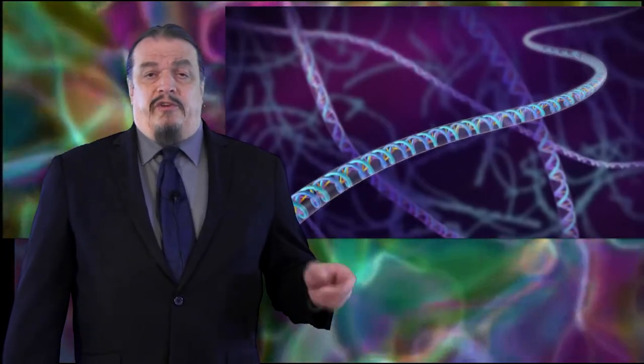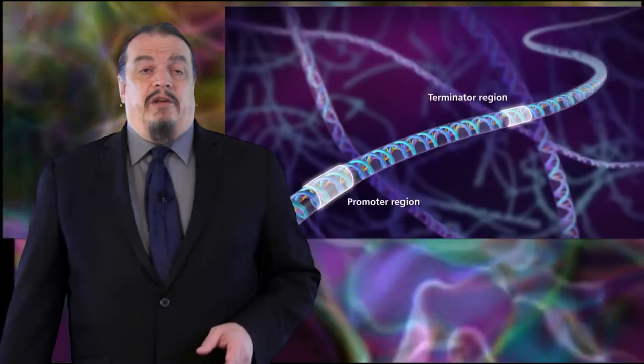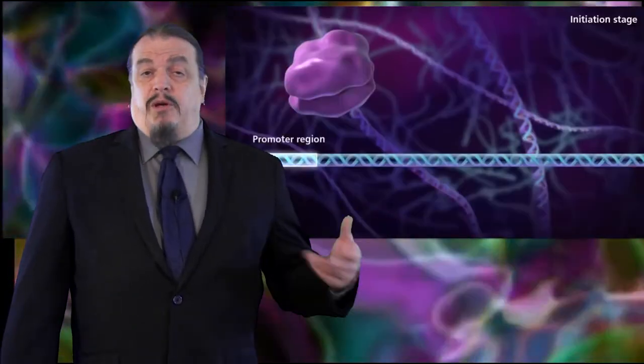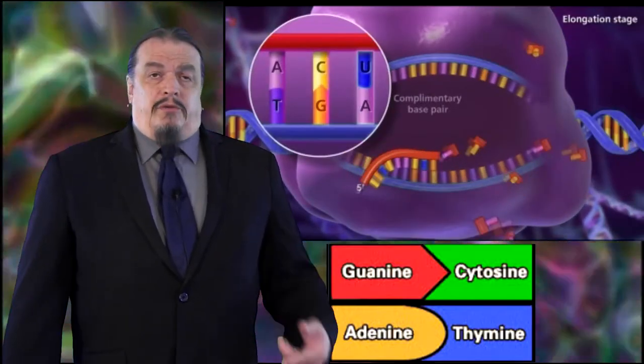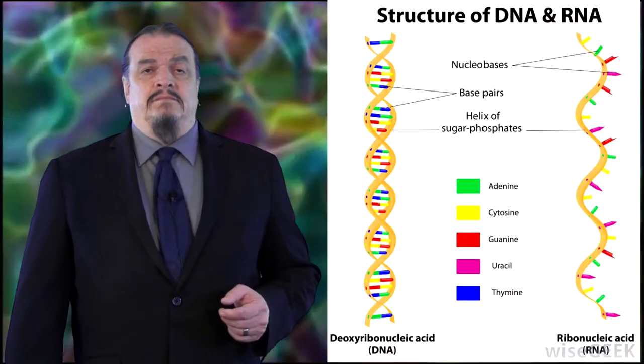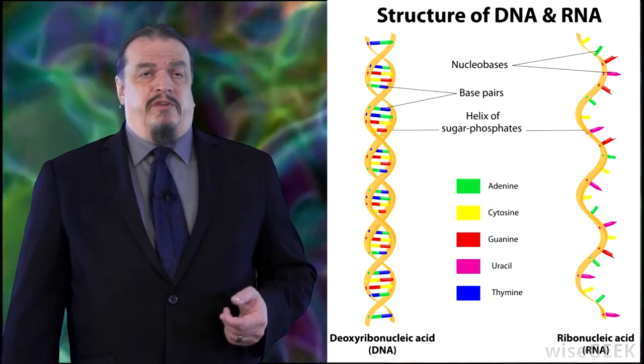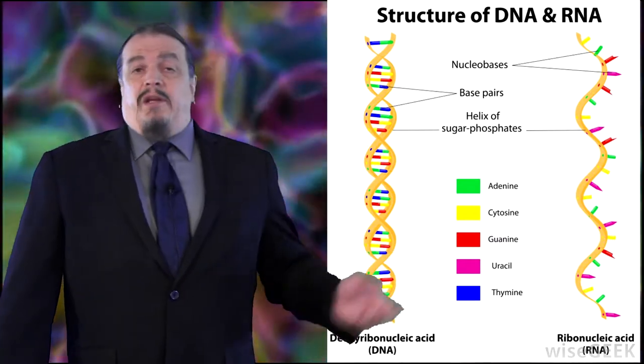The DNA polymerase attaches to a region called a promoter and detaches at a terminator region. Binding at the promoter prompts the DNA strand to unzip, then the polymerase starts typing out a sequence of RNA. Note that guanine always binds with cytosine and adenine with thymine, except that RNA uses uracil instead of thymine, so adenine binds with uracil in RNA and with thymine in DNA.